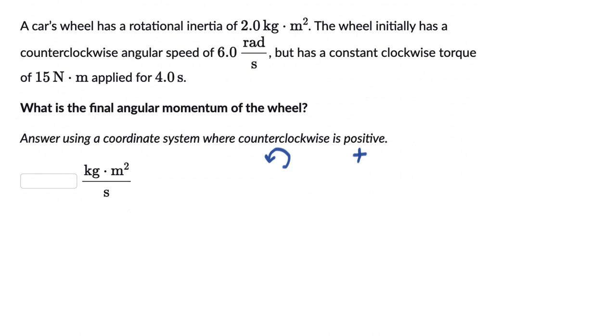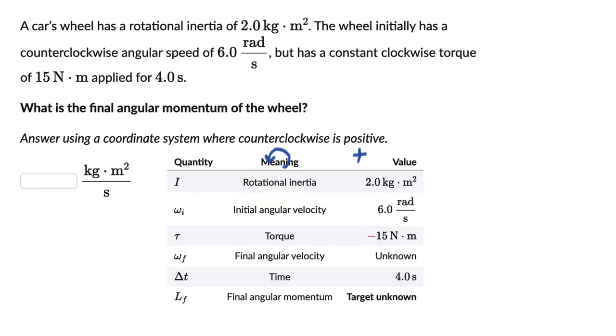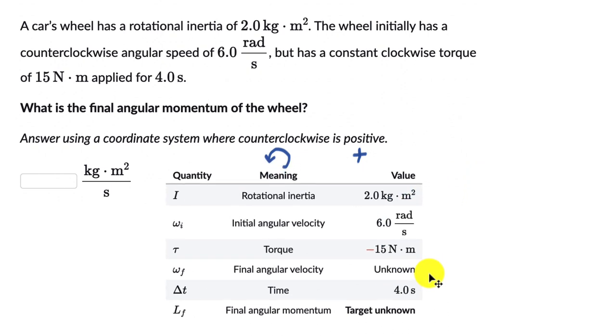Now for such questions, let's try to list down all the quantities that we know. So we know the quantity of rotational inertia I, value is this. We know initial angular velocity ω_i, we know the torque and there is a negative sign here because the torque is in a clockwise direction. Clockwise is being considered negative. Counter-clockwise is being considered positive. We don't know the final angular velocity ω_f, we do know the initial angular velocity. We do know the time for which the torque was applied, 4 seconds.